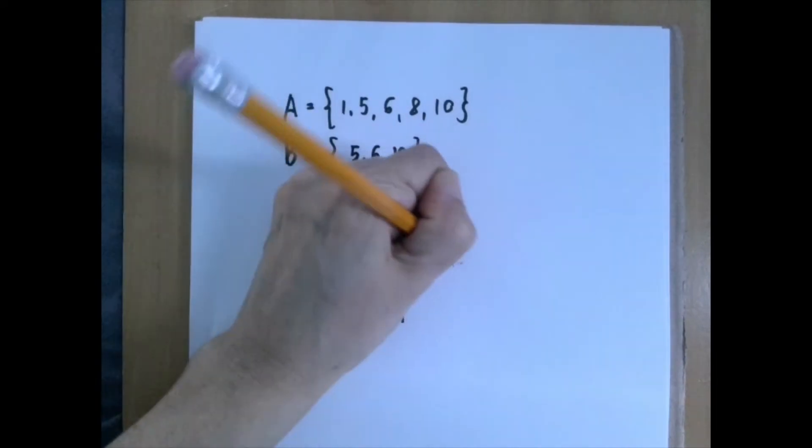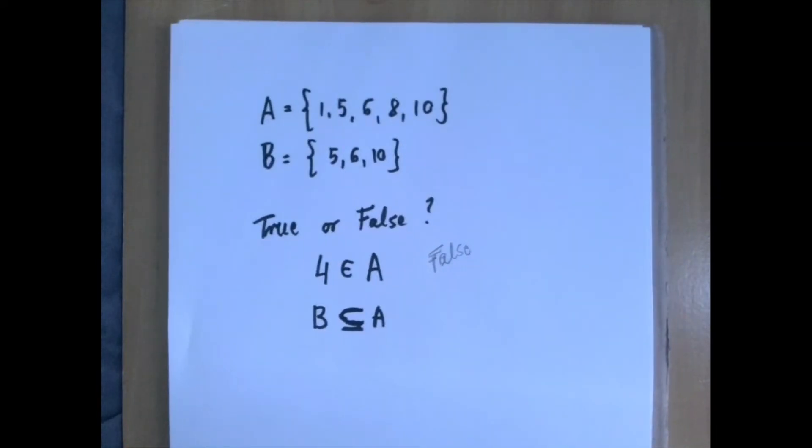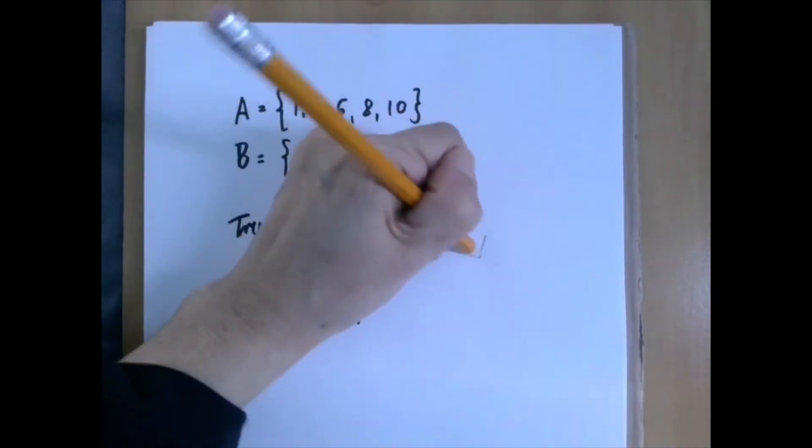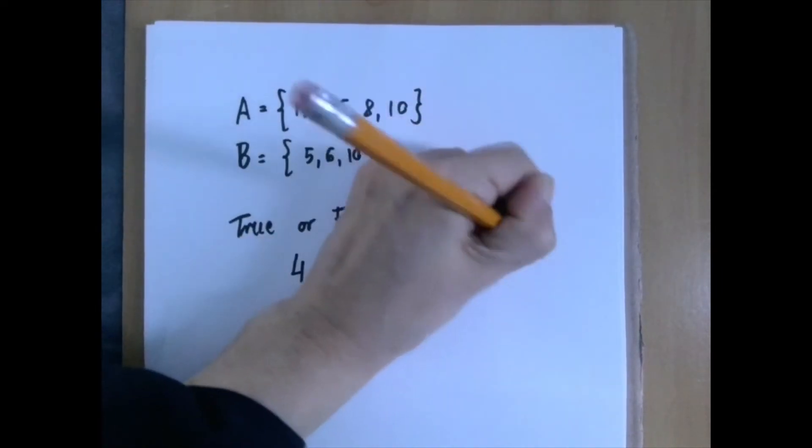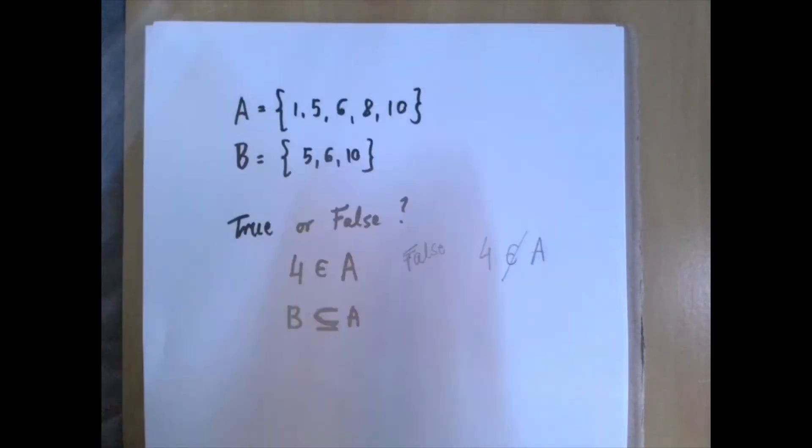which makes this statement false. If you want to say 4 is not an element of A, the notation can be the same element symbol, and then we cross it out. This reads: 4 is not an element of A.